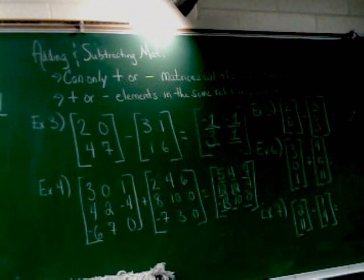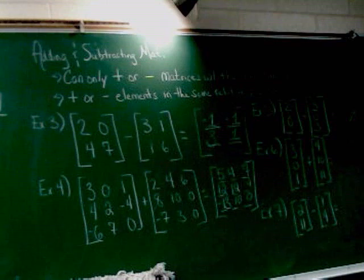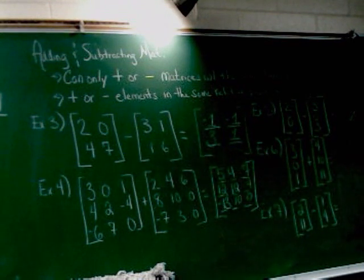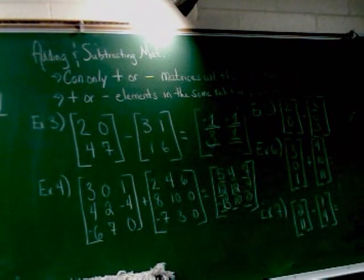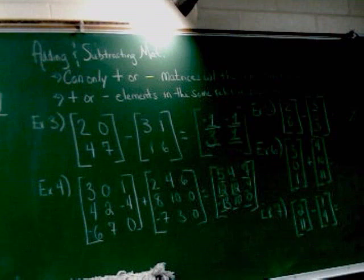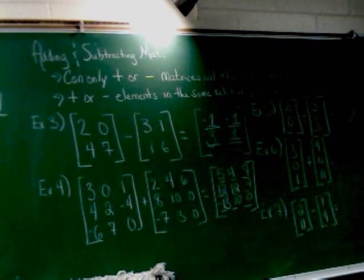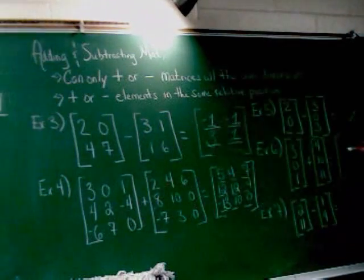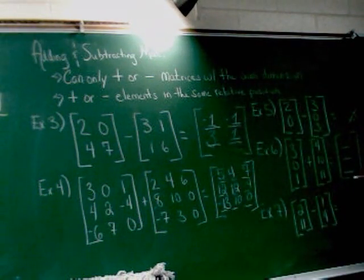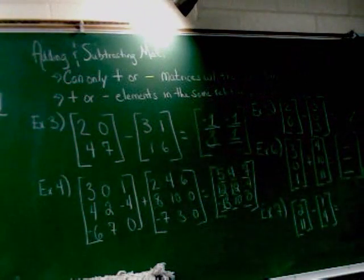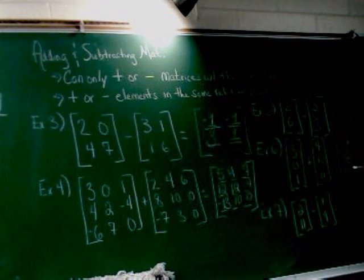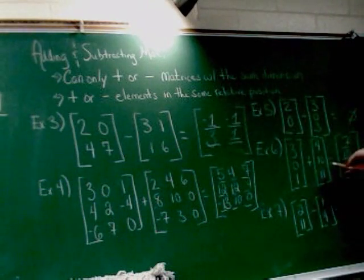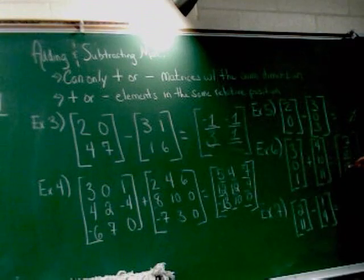Example 6. 3, 0, 1, 4, 10, 11 plus 3, 0, 1, 4, 10, 11. Okay, you can see these are the same size. They're both 3 by 1 matrices, 3 rows and 1 column. Okay, solutions. 7, 10, and 12. Good. 3 plus 4 made the 7, 0 plus 10 made the 10, 1 plus 11 made the 12.